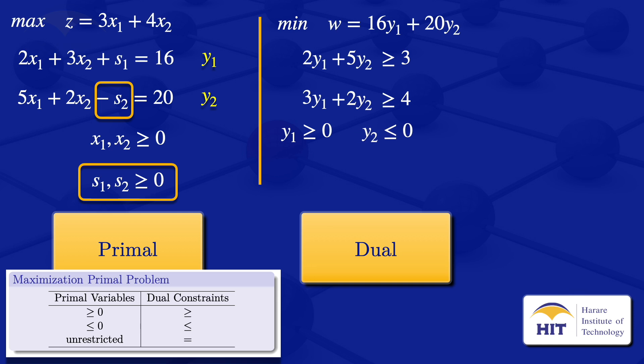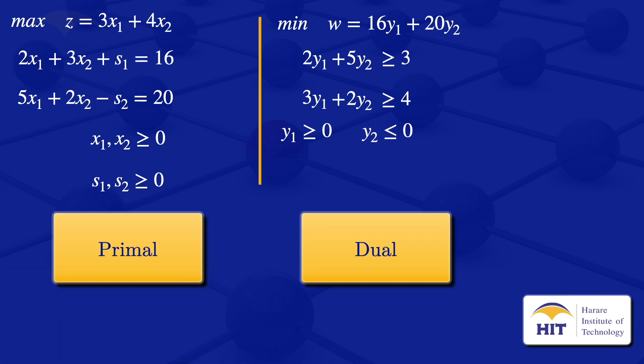We have now covered all primal variables: x1, x2, s1, and s2. The dual problem is: minimize w equals 16y1 plus 20y2, subject to 2y1 plus 5y2 greater than or equals to 3, 3y1 plus 2y2 greater than or equals to 4, y1 greater than or equals to 0, and y2 less than or equals to 0. This is the dual of the given primal problem.